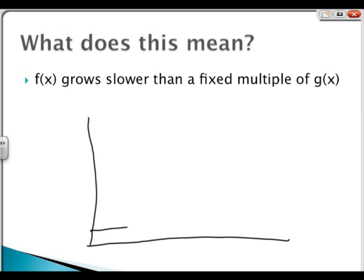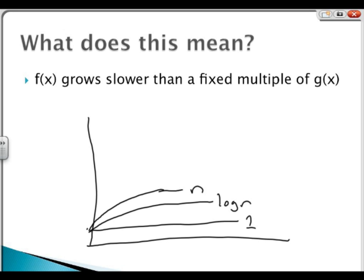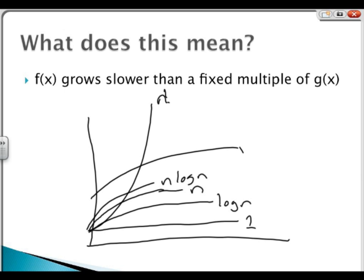You start out with constants — say, 1. Then the next function is log n. Then n, then n times log n, then n factorial, all the way up. Then n squared, and 2 to the n.